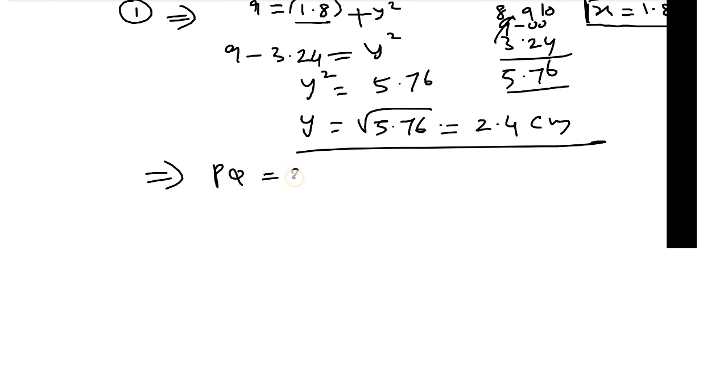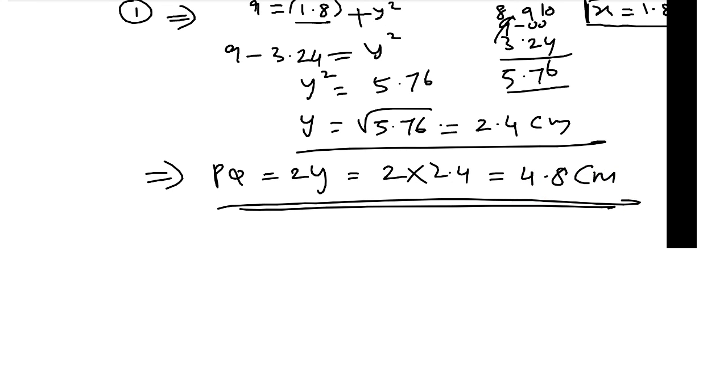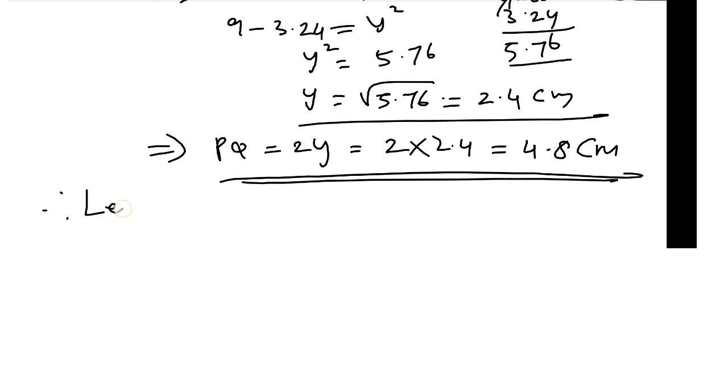PQ equals 2y, that is 2 into 2.4, that is equal to 4.8 cm. Therefore, length of common chord PQ equals 4.8 cm.